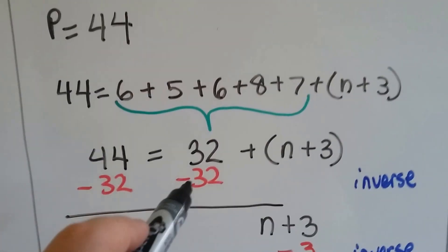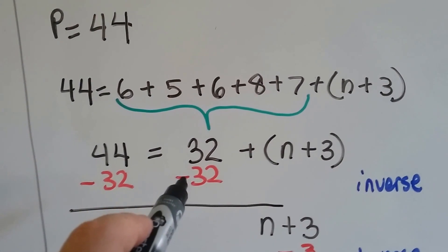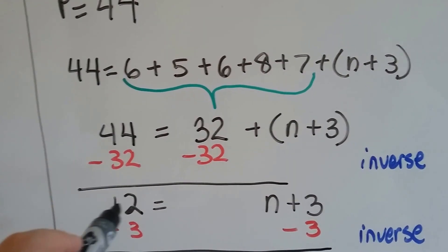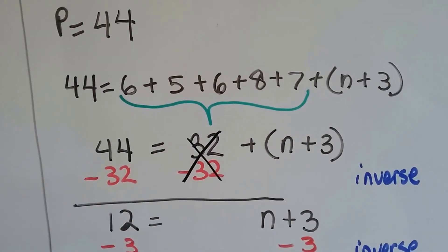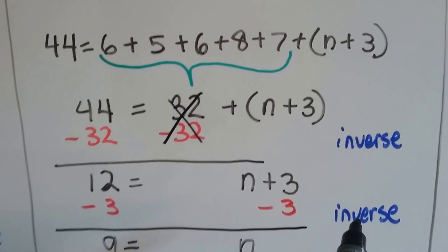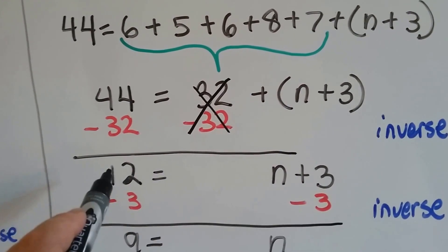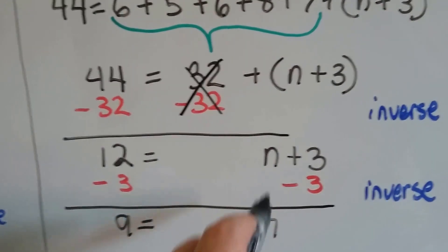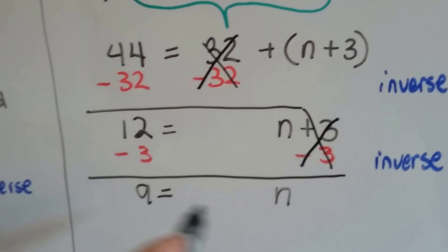We're going to use our inverse operation — because this is a positive 32, we're going to subtract 32 from each side of the equal sign. 44 minus 32 is 12. The plus 32 and minus 32 made zero pairs, which got rid of it. Now we've got 12 is equal to n plus 3. We're going to use the inverse again — because this is a plus 3, we're going to use a minus 3 on each side of the equal sign. 12 minus 3 is 9, and the plus 3 and minus 3 made zero pairs that canceled each other out, and now we have 9 is equal to n.